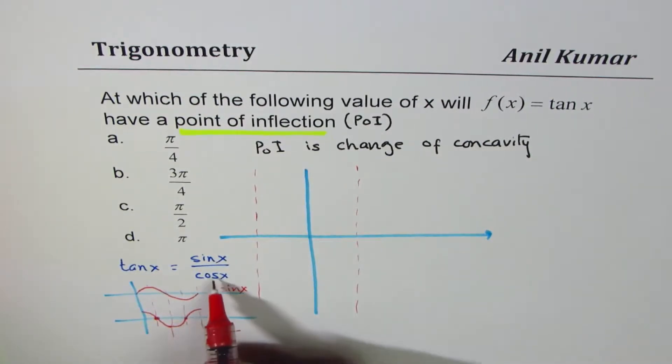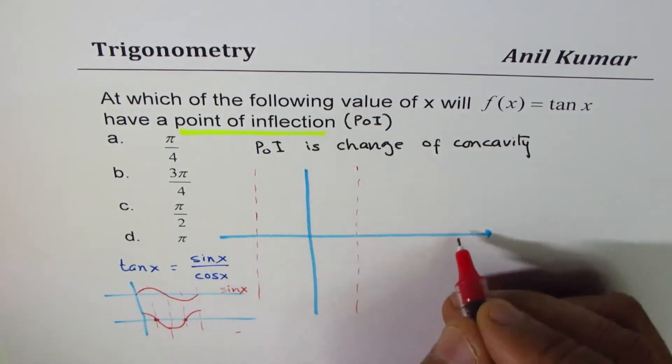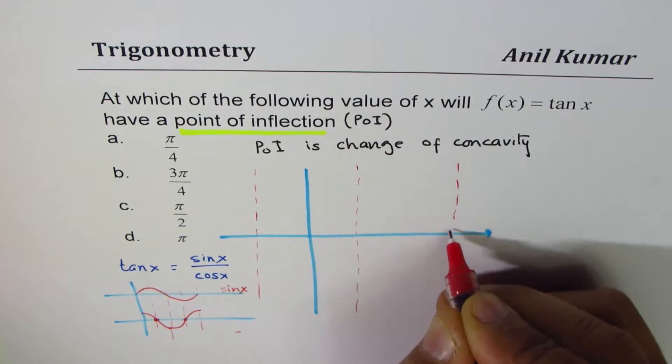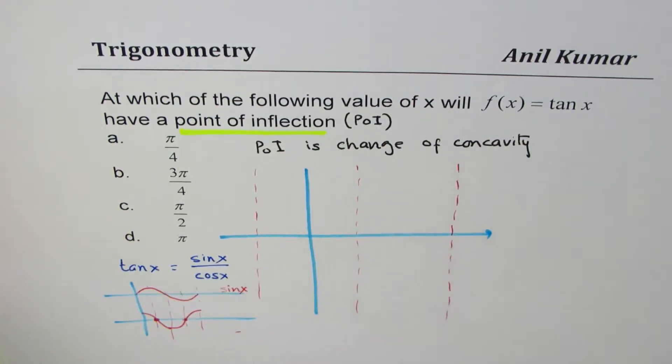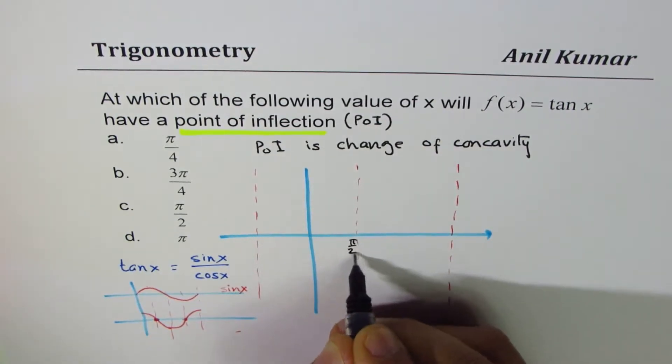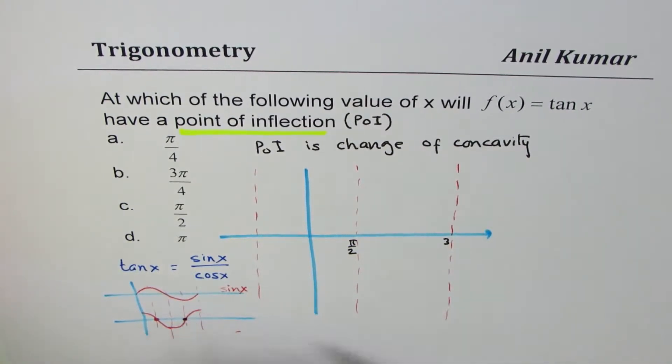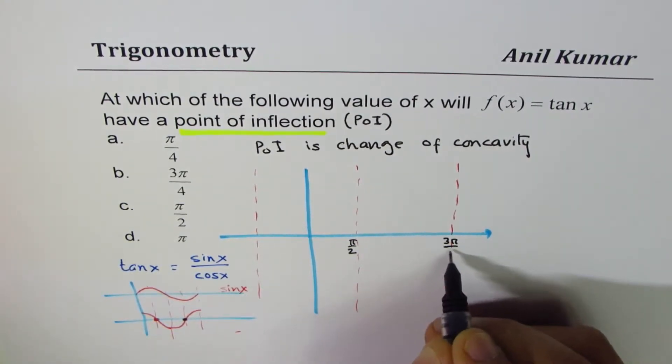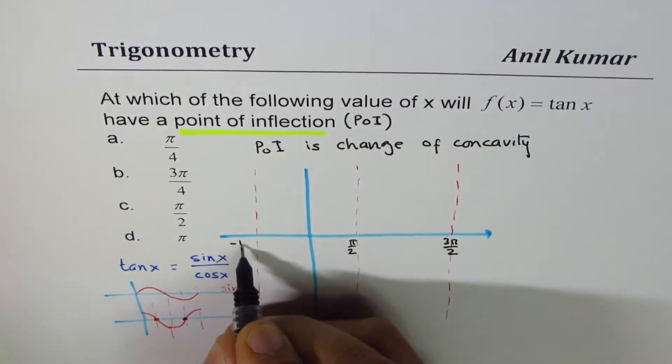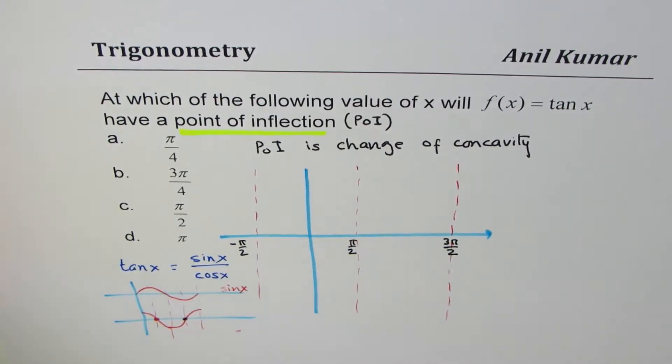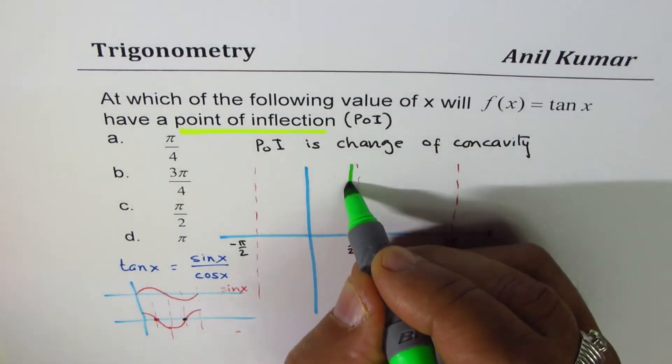So what do you notice here is that cos x which is in the denominator is 0 for π/2 and 3π/2, right? So π apart. So we get vertical asymptotes at π/2, 3π/2, also -π/2.